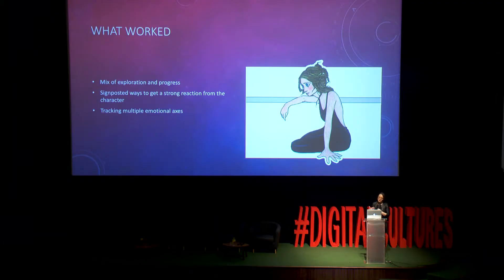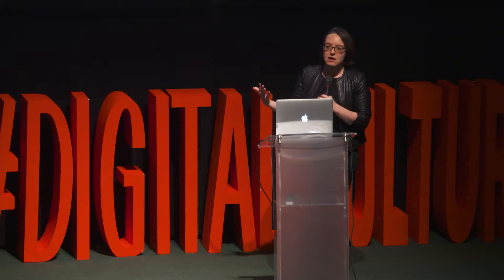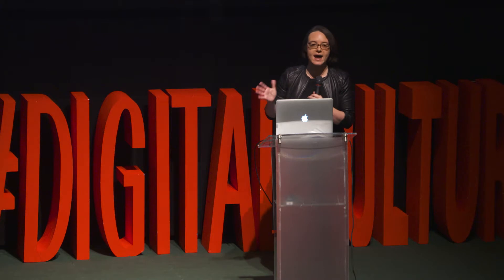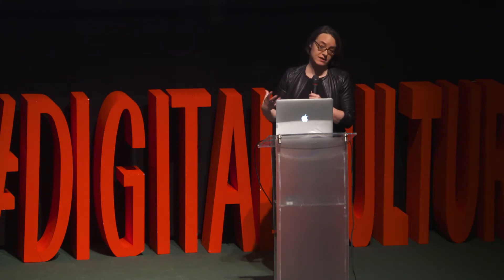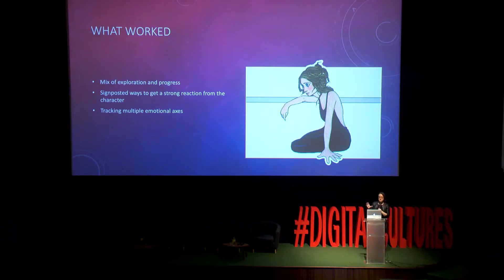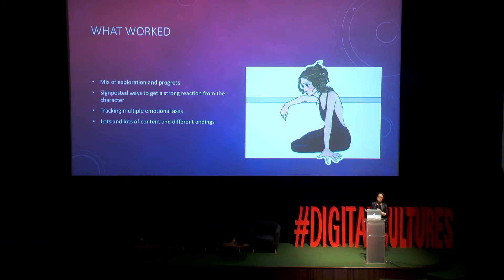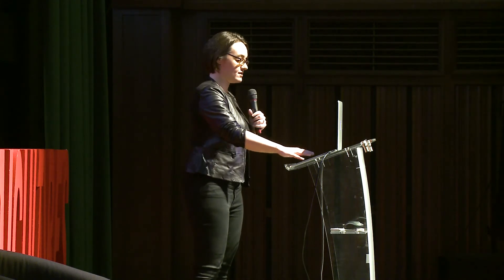One of the other things the system was doing was tracking multiple emotional axes. A lot of games up to this point would track a single spectrum of how much does this person like you. But this character had an affinity with the player plus other axes: how much do you seem to believe she's a real person versus merely an AI character — and she cares about that. She cares about how much tension there is between you, which might be sexual tension or emotional tension, and all of those things affect her reactions. Having a huge amount of content and lots of different endings was also key. The code size was about as large as many contemporary games that took 8 to 20 hours to play, but was all in the form of that actual conversation. This was back in 2000, so it's been quite a long time ago.